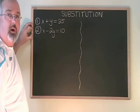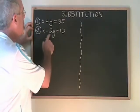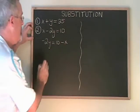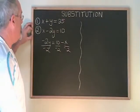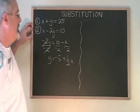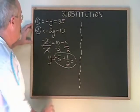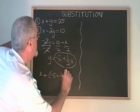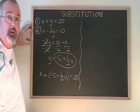In this example, we have x plus y equals 25 and x minus 2y equals 10. Again, I'm going to choose to isolate the y in the second equation. I get negative 2y equals 10 minus x. Then, dividing everything in the equation by negative 2, I get y equals negative 5 plus one-half x. I substitute this expression that y is equal to into the y position in the first equation, and I get x plus negative 5 plus one-half x equals 25. Now we have an equation with only one variable, the x, so we can solve for x.